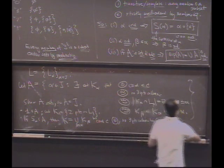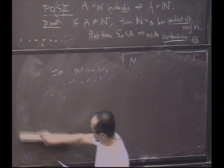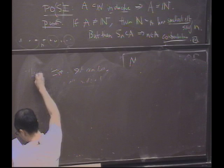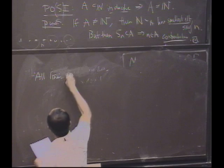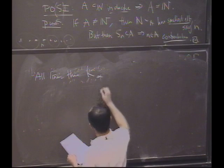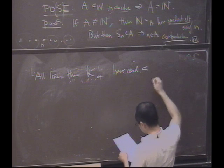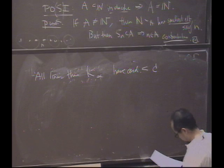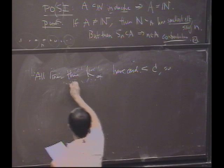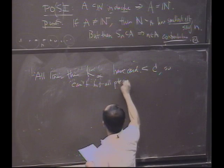Oh. Well, then what else? The last thing to notice is when you do that, you might be missing some points on the new line. So would you agree that all lines through K_alpha have cardinality less than C? So through the existing points, it can't hit all the points of L_alpha.